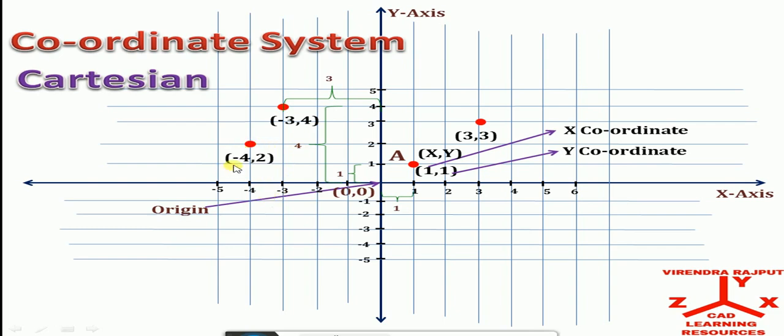Similarly, coordinates of this point: minus 4 comma 2. Coordinates of this point: minus 2 comma minus 2. Horizontal distance on the negative x-axis is minus 2, and vertical distance from the origin in the negative y-axis minus 2. Similarly here minus 1 comma minus 4.